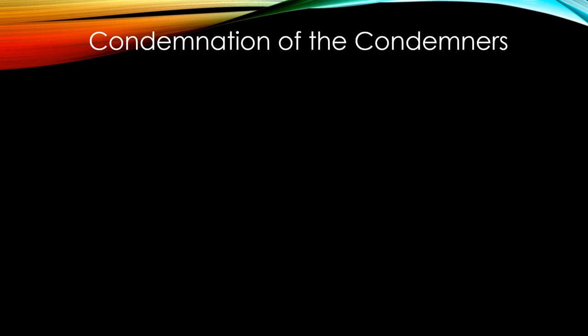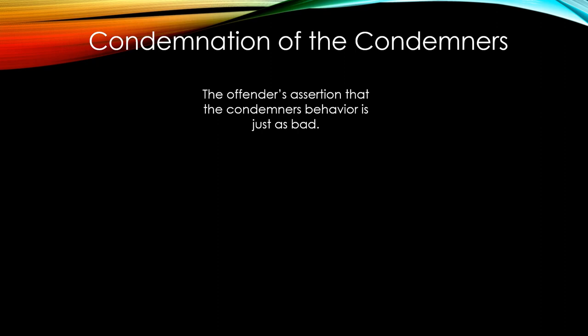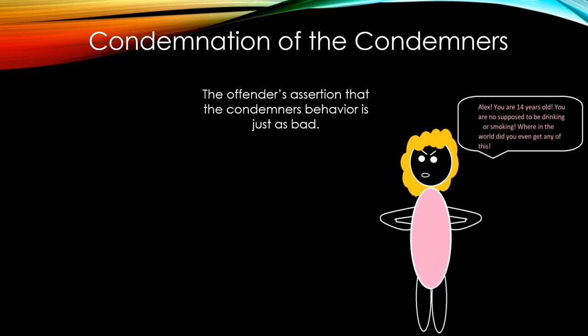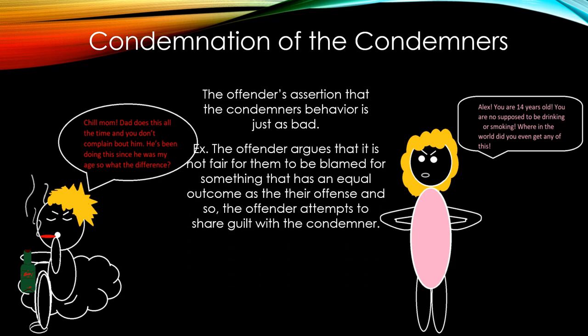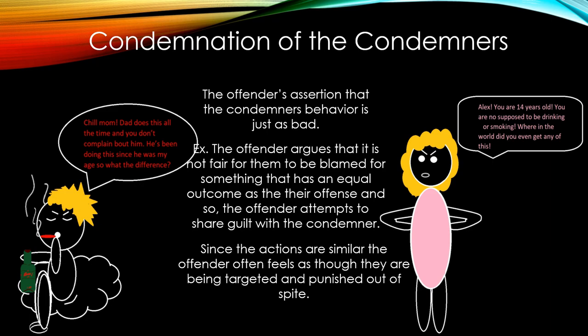Condemnation of the condemners is the offender's assertion that the condemners' behavior is just as bad. In the example, a mother catches her 14-year-old son Alex drinking and smoking. Alex responds: 'Chill, Mom. Dad does this all the time and you don't complain about him. He's been doing this since he was my age, so what's the difference?' The offender argues it is unfair to be blamed for something with an equal outcome to others' actions, attempting to share guilt with the condemner and feeling targeted out of spite.